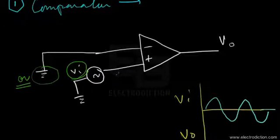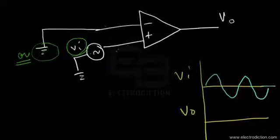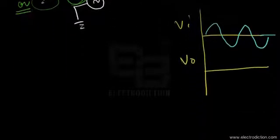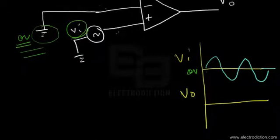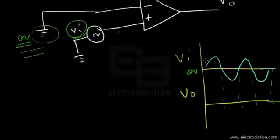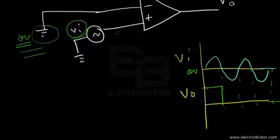Whenever VI would be greater than ground, the op-amp's output would switch to the positive saturation voltage level. On the other hand, whenever the time-varying input signal VI would be less than the ground voltage, the op-amp's output would just swing towards the negative saturation voltage levels.